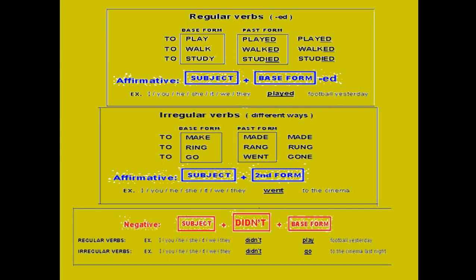Look at the negative form. We use 'did,' our auxiliary verb, in negative form. We add 'not' after 'did.' Formula: subject + didn't + base form. Base form means verb one. If we use 'didn't' in negative form, the verb doesn't change. Regular verbs: I, you, he, she, it, we, they didn't play. Look at 'play' — it doesn't change. Didn't play football yesterday. Irregular verbs: I, you, he, she, it, we, they didn't go to the cinema last night. 'Last night' and 'yesterday' are time expressions.